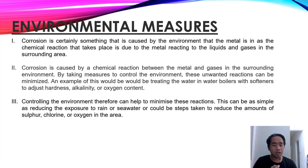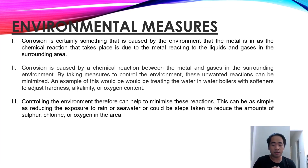The third prevention method is environmental measures. Corrosion is caused by the environment the metal is in, as the chemical reaction takes place due to the metal reacting to liquids and gases in the surrounding area. By taking measures to control the environment, this unwanted reaction can be minimized. An example would be treating water in a water boiler with softener to adjust hardness, alkalinity, and oxygen content. Controlling the environment can be as simple as reducing exposure to rain and seawater, or taking steps to reduce the amount of sulfur, chlorine, or oxygen in the area.